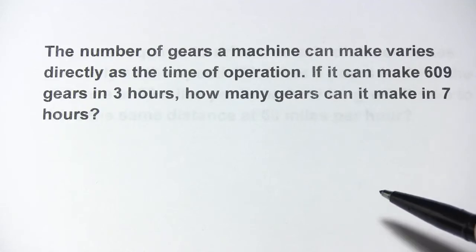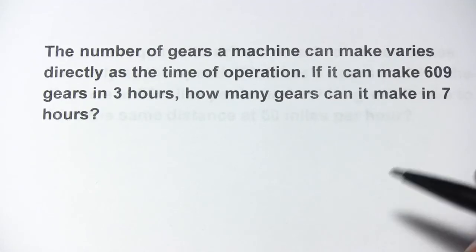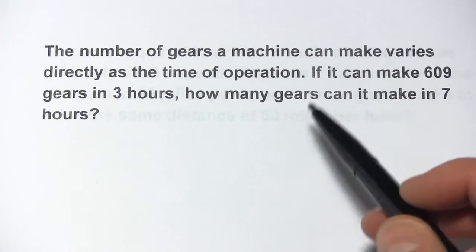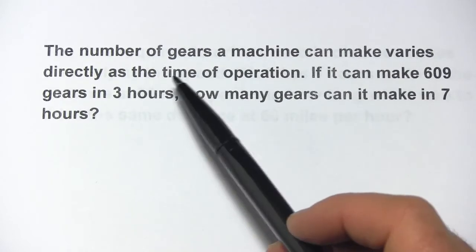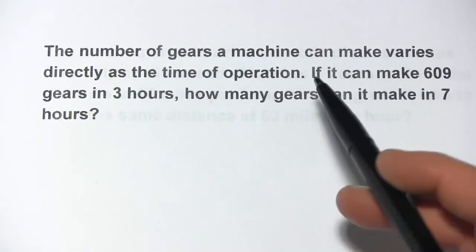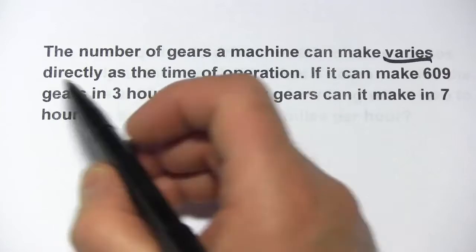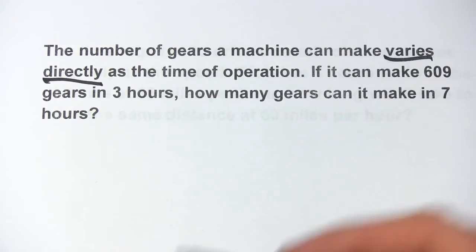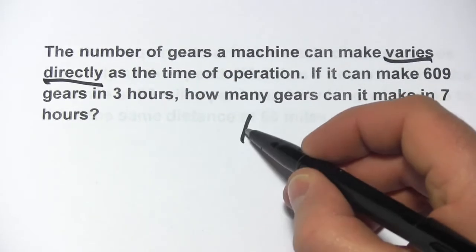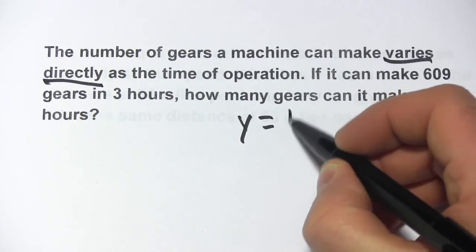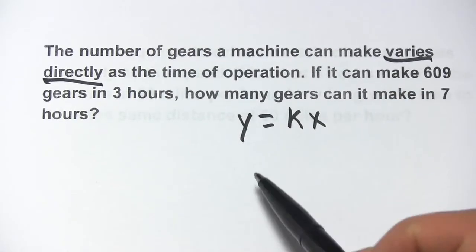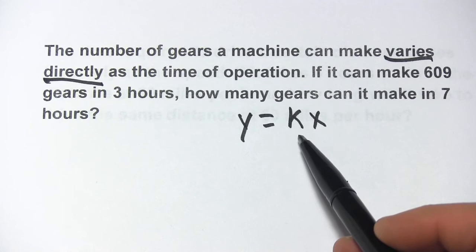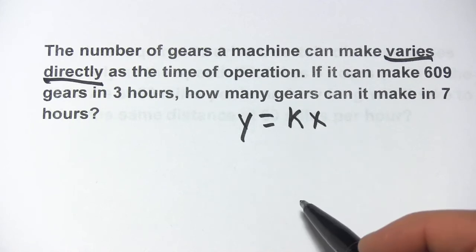In these problems, we're dealing with something called direct variation. You'll see language like this — the number of gears a machine can make varies directly. When something varies directly with something else, if we said y varies directly with x, we would write it like this: y equals the constant of variation times x.